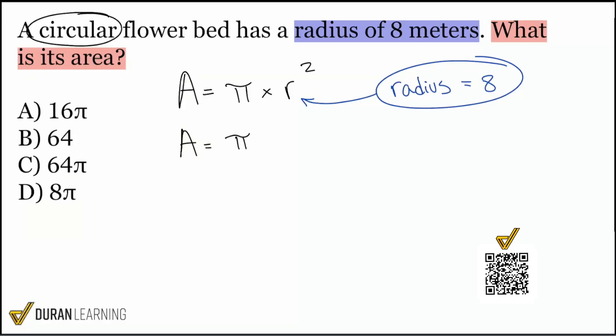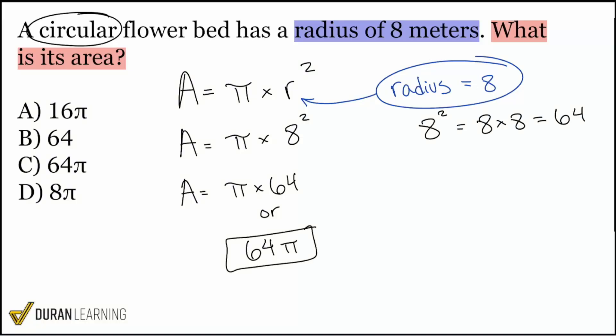A equals pi times eight squared, eight squared. Remember, that's the same as eight times eight. And that's 64. So because of that, we can replace eight squared with 64. So we have pi times 64, or 64 pi. And there we are. Final answer is going to be 64 pi. Answer choice C.